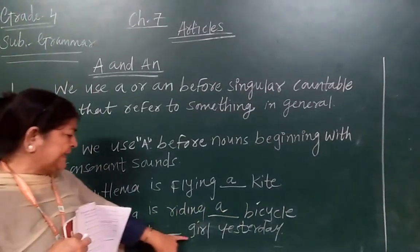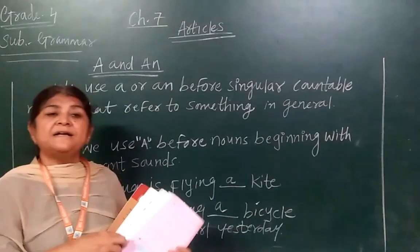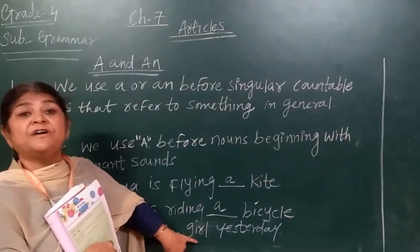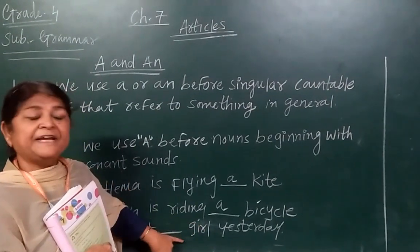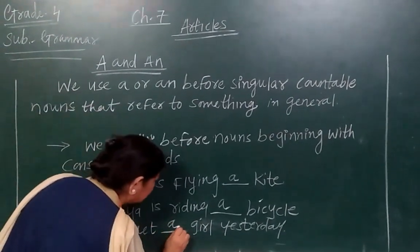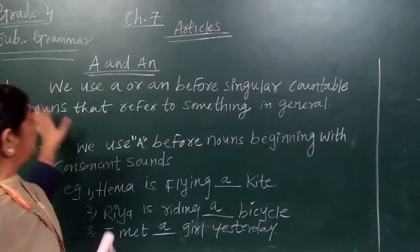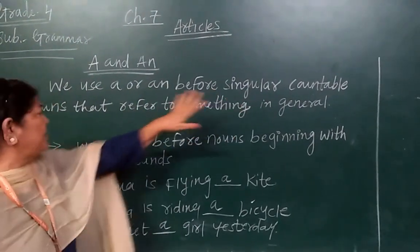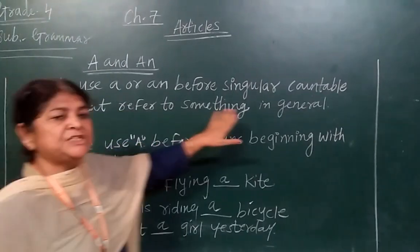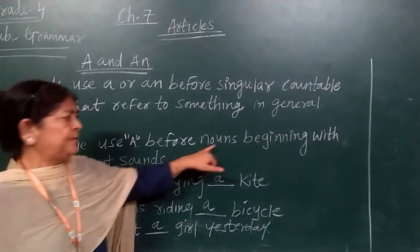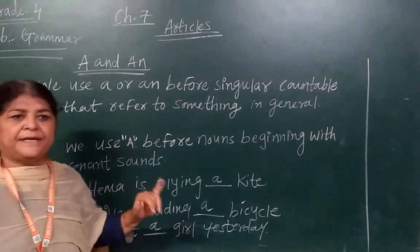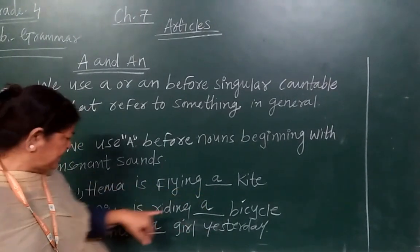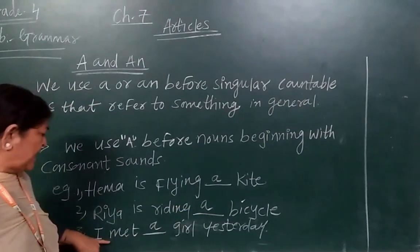Number three: I met a girl yesterday. Girl is a noun, and G is a consonant. So we write A — I met a girl yesterday. Summary: Hema is flying a kite. Rhea is riding a bicycle. I met a girl yesterday.